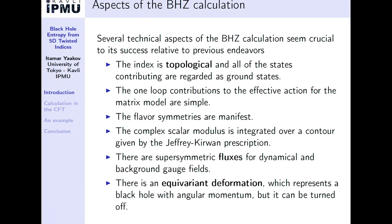The contour for integrating the modulus was understood from the relationship to two dimensions and is given by the Jeffrey-Kirwan prescription, which we also heard about in the previous talk. And possibly most importantly, there are supersymmetric fluxes — flux supported on S2 for both dynamical and background gauge fields. For the background gauge fields, this is needed to reproduce the entropy of a charged black hole. It's also very important that the flux for the dynamical gauge fields is summed over, and this summation allowed reproduction of the correct entropy. There's also an equivariant deformation on S2 that, unlike in the superconformal index case, can be turned off.